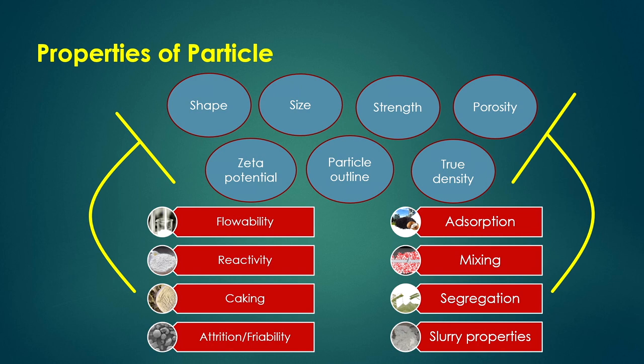Attrition and friability are also important parameters affected by particle properties. Attrition occurs when particles interact with other particles — high collision and high kinetic energy in a device causes particle-particle interaction leading to breakage of the particles. This attrition depends on the particle's strength, size, and shape.